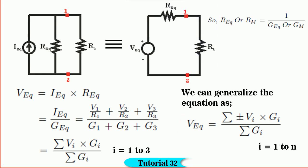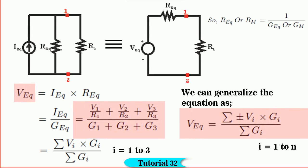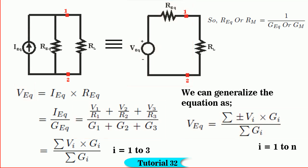Friends, using the equation for V equivalent, you can directly convert the given parallel connected sources into an equivalent single source in series with its resistance. Now we are ready to solve numerical examples. Let's go ahead, friends.